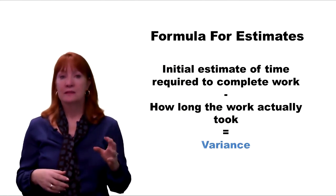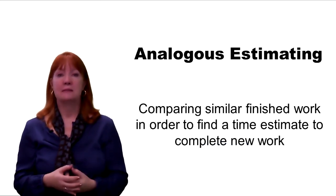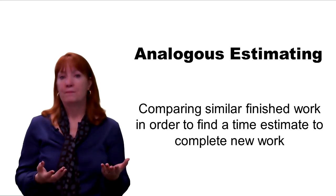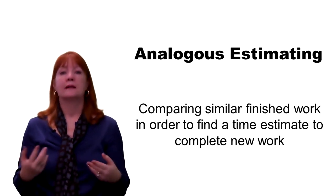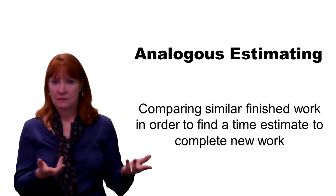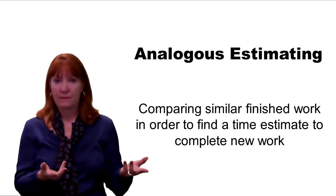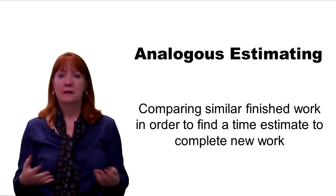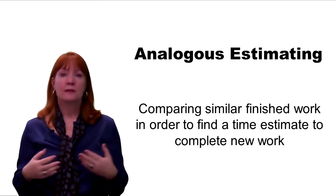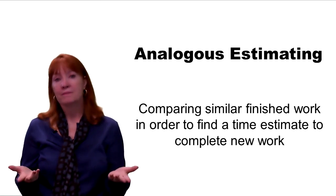When you do this, this is called analogous estimating. For example, you're creating a report similar to the quarterly customer analysis report that we just used in our example. And this report is based on one month of data instead of three months. Otherwise, you're going to still perform the same steps. Now you can change your estimate based on the fact that you're performing these steps but with one month of data.